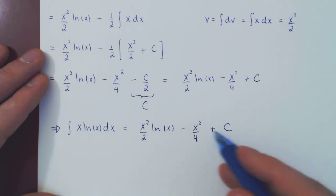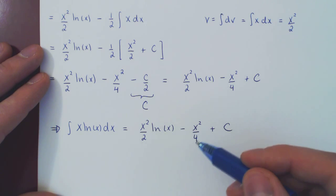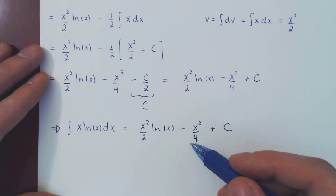And we're done. Now, if you wanted to, I'm not going to do it here, but you could factor an x squared over 2 from these two terms and have x squared over 2 times ln of x minus a half.